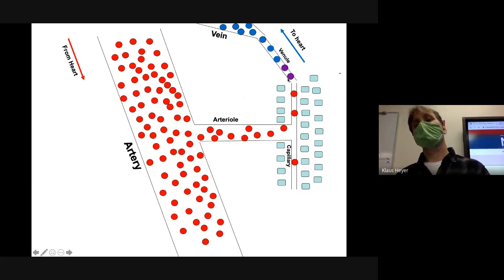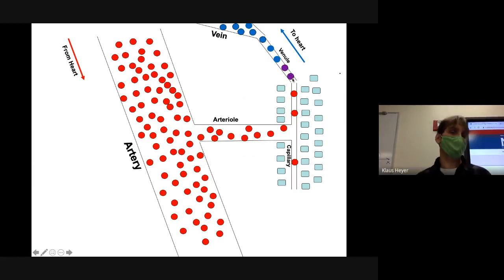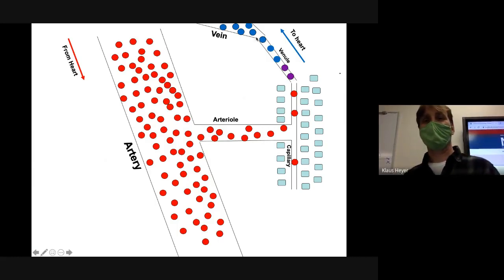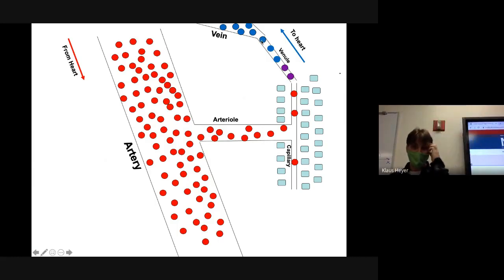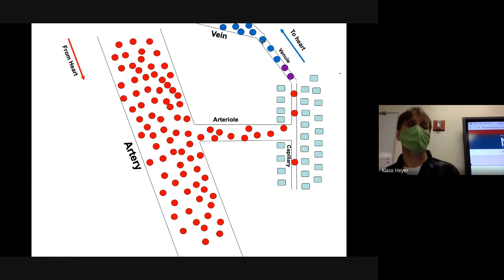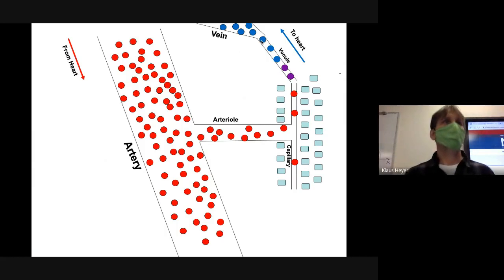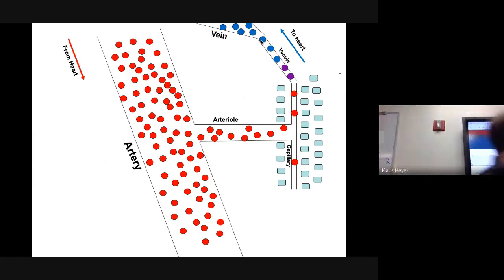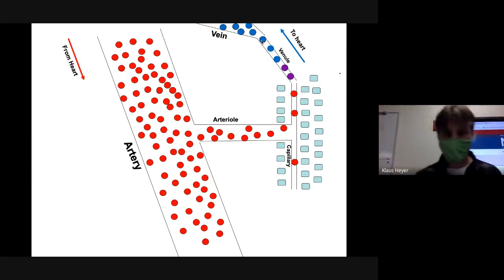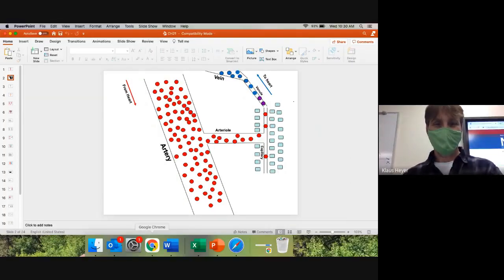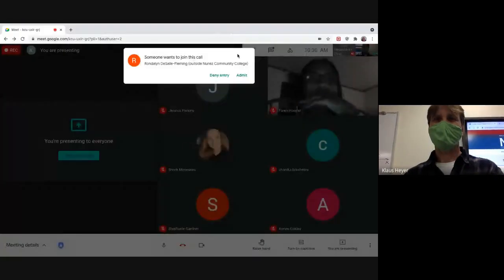I did a couple that were purple, where they're kind of oxygenated but kind of not. And then it turns blue as it's going towards a vein — that's deoxygenated blood. So I tried to color-code it.